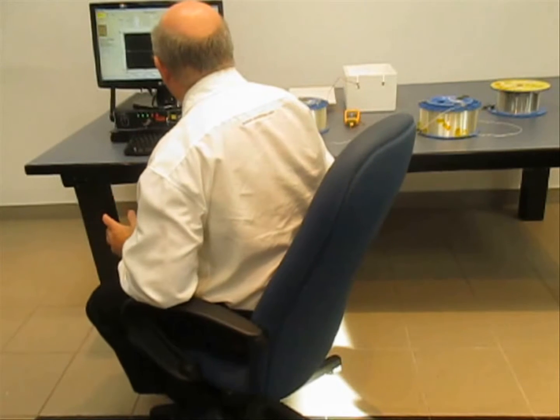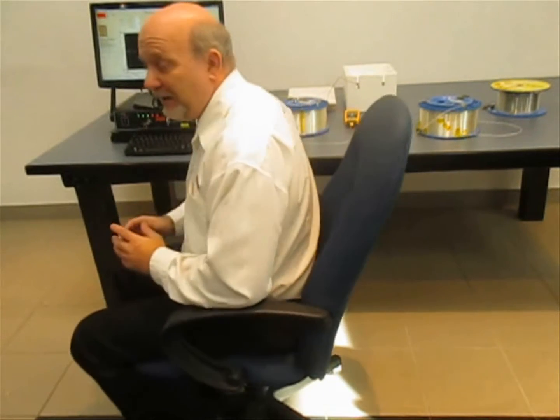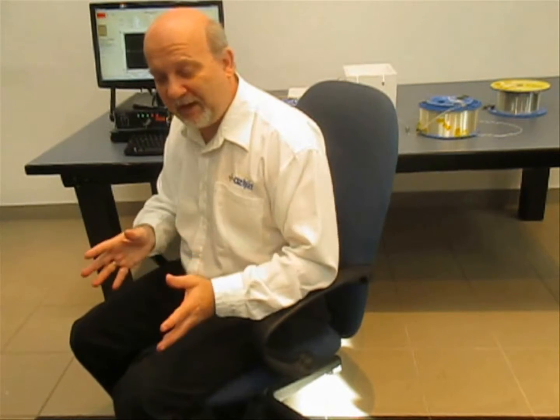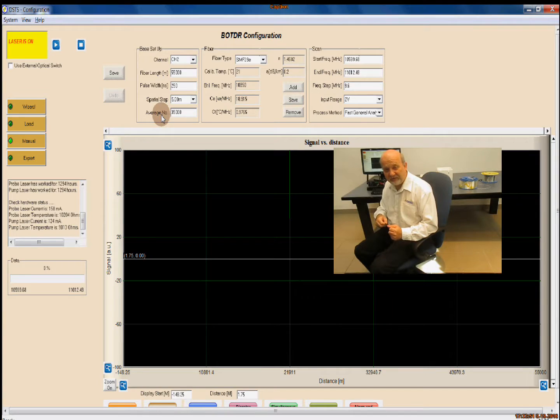Because it is such a long length of fiber, we're doing quite a lot of averaging here. We've set up the averages at 35,000 averages. The maximum setting we have is just over 65,000 averages. We're going about half of the maximum limit here. We could do it for a full 65,000, and that will give us a slightly better reading than what we're taking here. But this will do for our experiment, and it will allow us to take readings about once every 15 minutes.